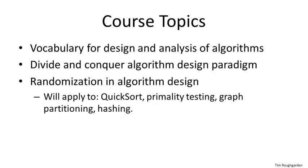A randomized algorithm is one that, in some sense, flips coins while it executes — it will have different executions if you run it over and over again on a fixed input. It turns out that allowing randomization internal to an algorithm often leads to simple, elegant, and practical solutions to various computational problems. The canonical example is randomized quicksort, which we will cover in detail. Randomized primality testing is another killer application, and we'll also discuss a randomized approach to graph partitioning and how randomization is used to reason about hash functions and hash maps.